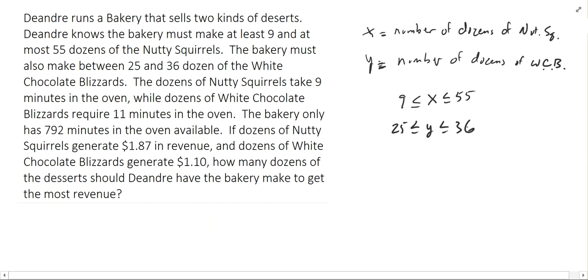Those are a couple of constraints. And then the other restriction we have is the total amount of oven time. So every dozen of nutty squirrels is going to use 9 minutes in the oven. So 9X is how much time we're going to spend making nutty squirrels, and 11Y is the amount of time baking the white chocolate blizzards. We have a total of 792 minutes available. So I've got 9X plus 11Y is less than or equal to 792.